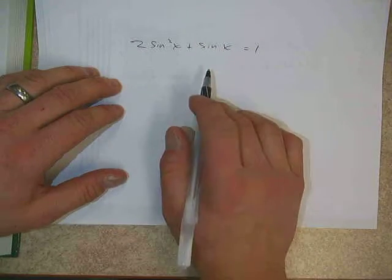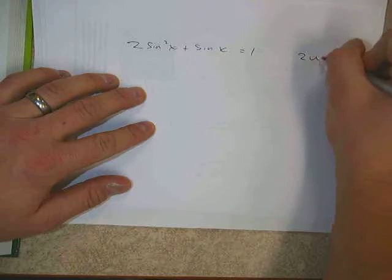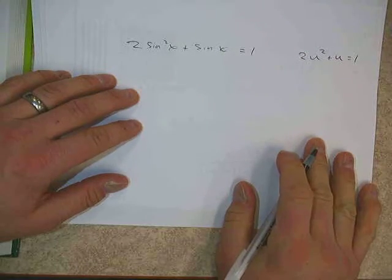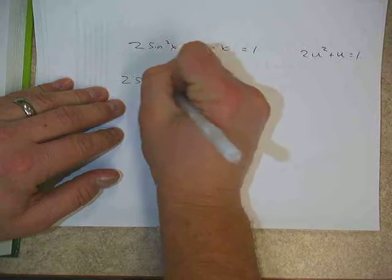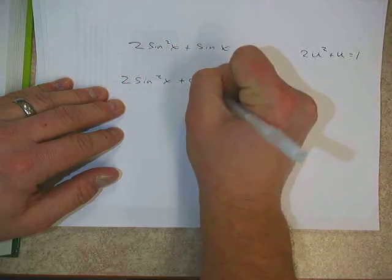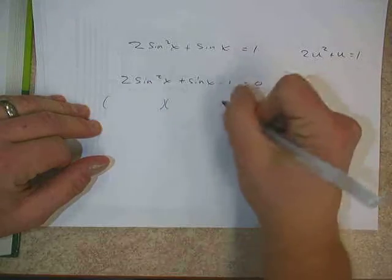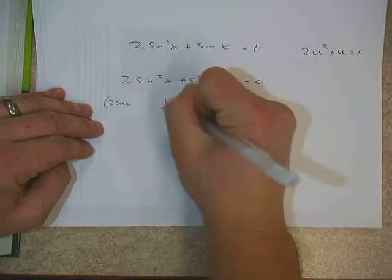And the equation is two sine squared x plus sine x equals 1. So if we're going to solve this equation, what I want you to try to recognize here is that this is really just a quadratic equation in disguise. This is really of the same form as two u squared plus u equals 1. And so we're going to solve it just like we would solve any quadratic equation. We're going to get everything on the same side.